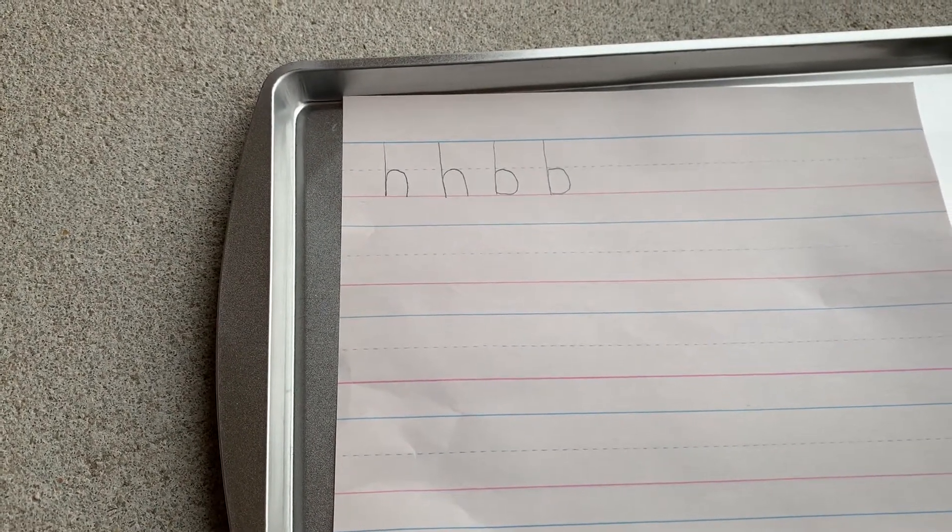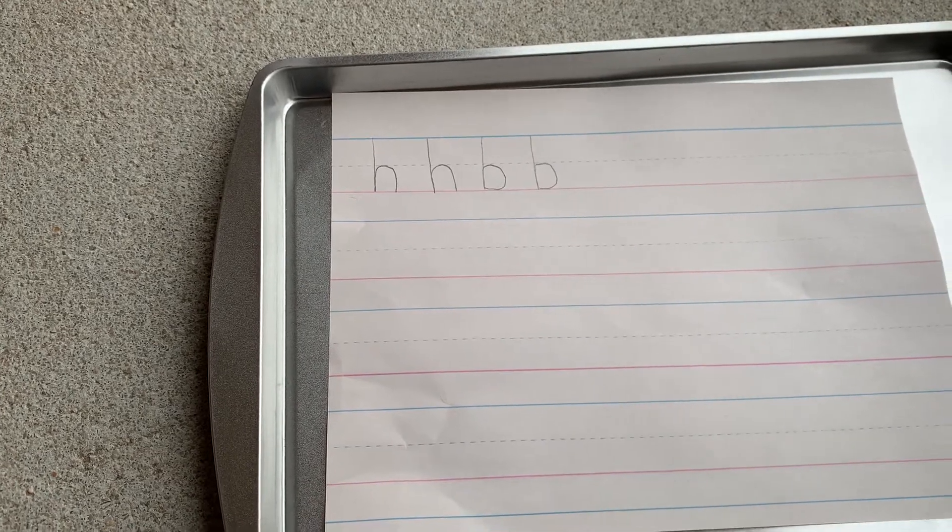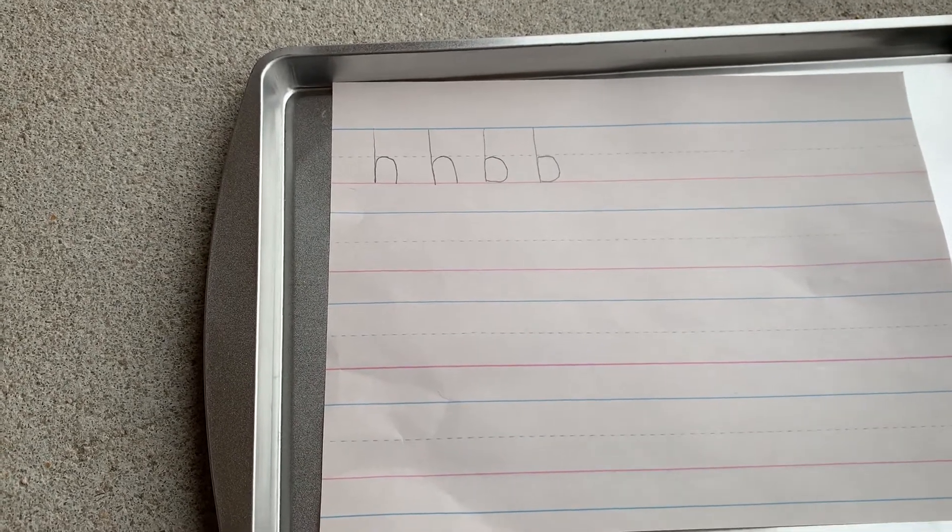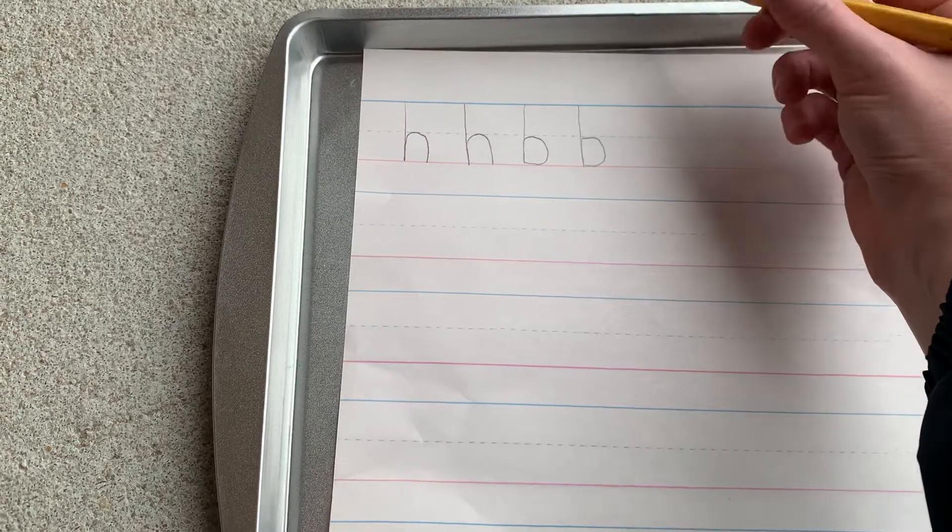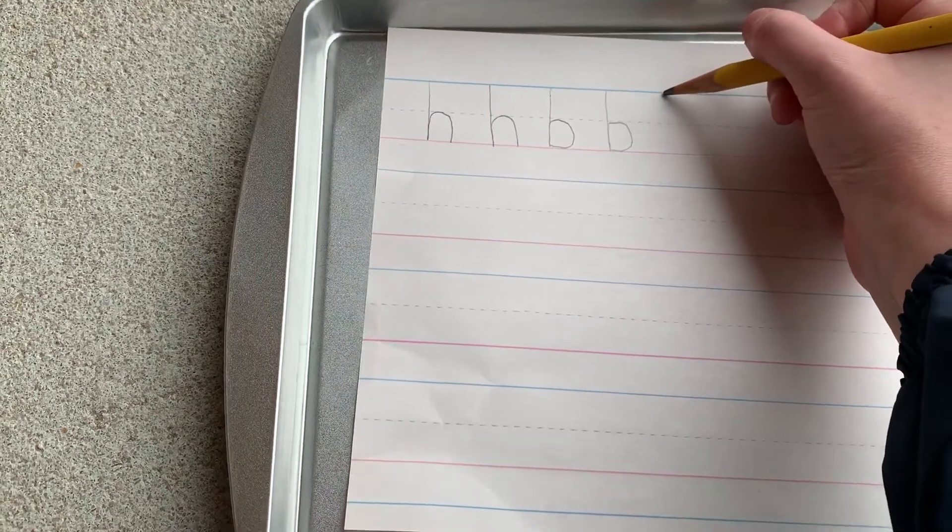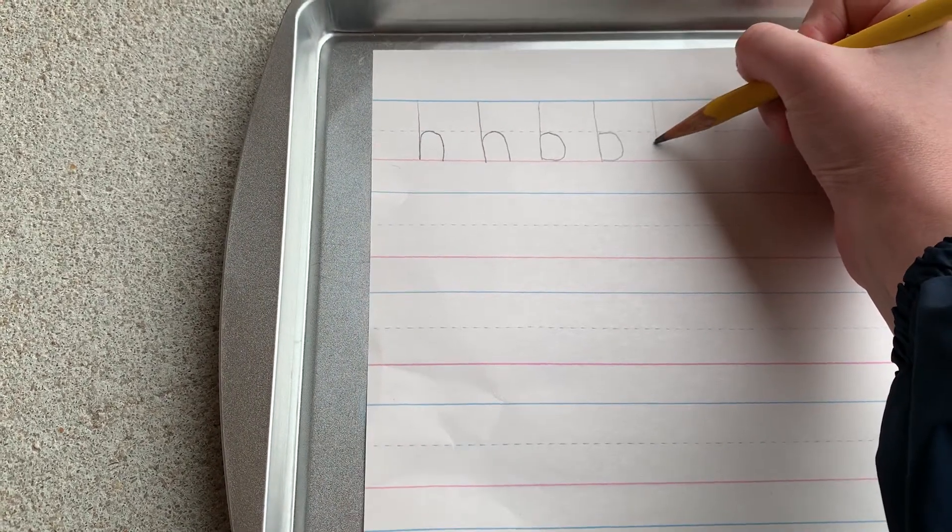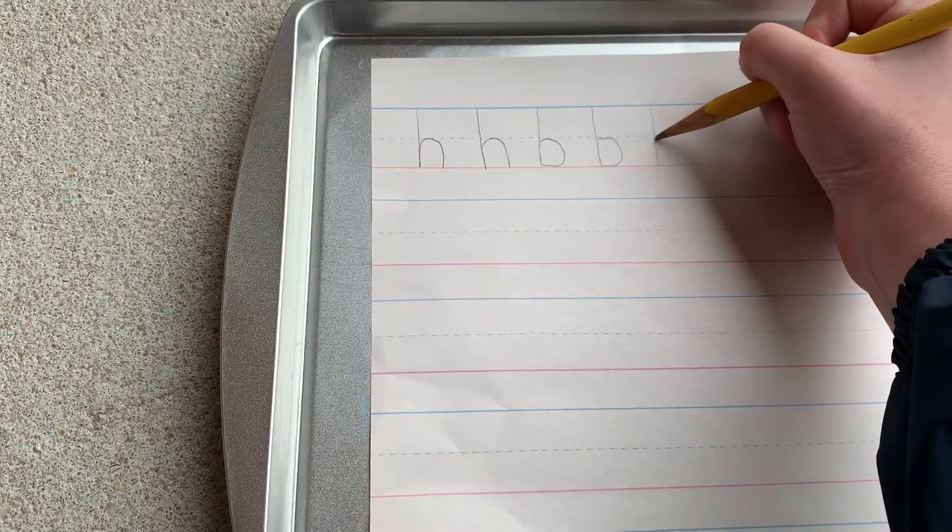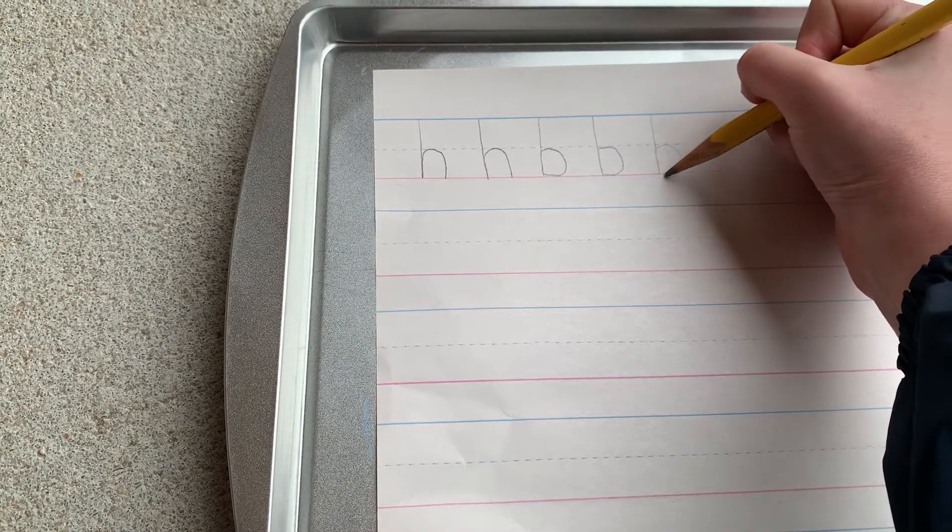All right, let's try it one more time. Make sure you have your pencil and paper ready and make sure you're writing these along with me. Practice makes perfect. B drops down, bounces back up, and around the bats.